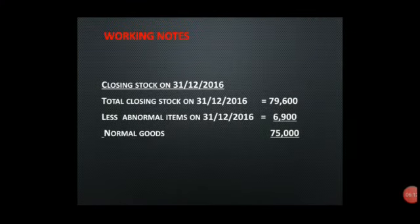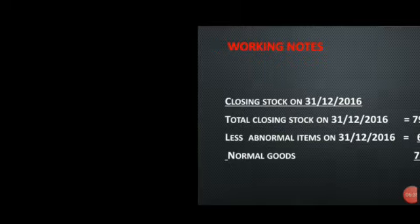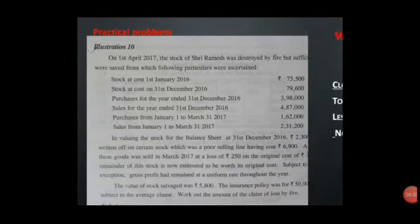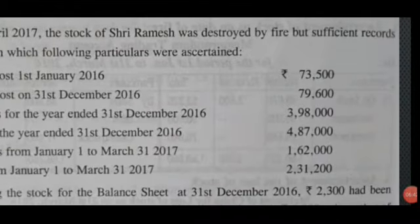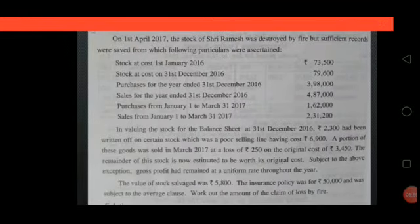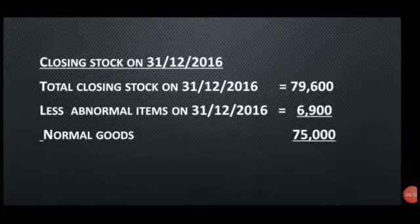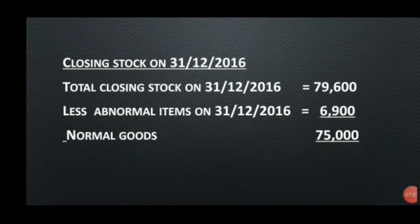In this question, we will see that if we are preparing a trading account, the closing stock will be made up of normal goods and abnormal goods. Let's look at the question. The question involves abnormal items. The total closing stock for 31st December comes to 1,797.